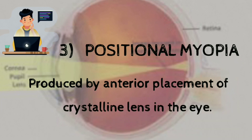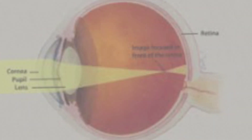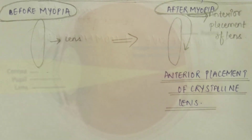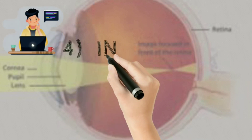The third type is positional myopia. Positional myopia is produced by anterior placement of the crystalline lens in the eye. As you can see here, before myopia the condition was normal, and after myopia the anterior placement of the lens occurs. The fourth type is index myopia.